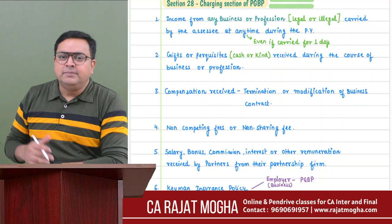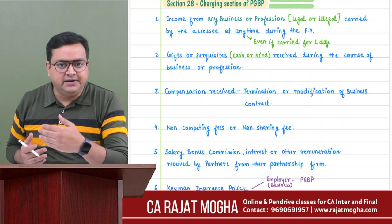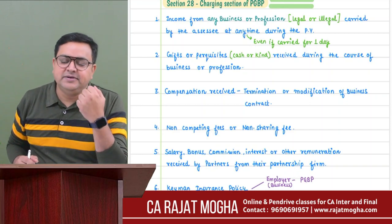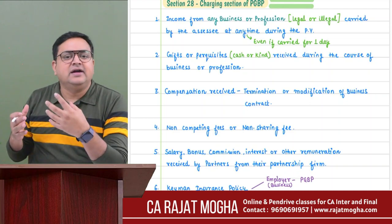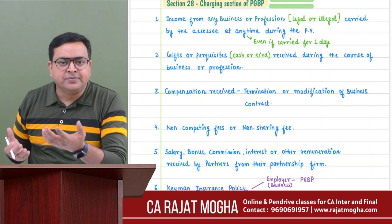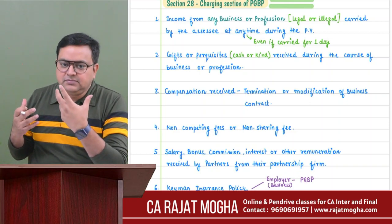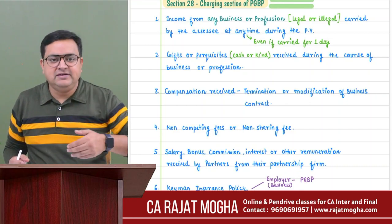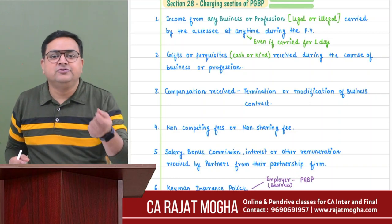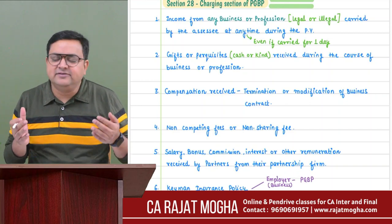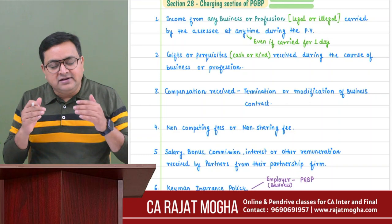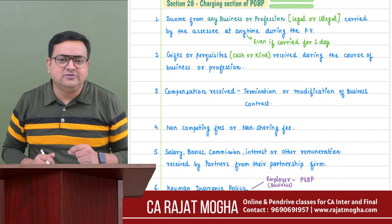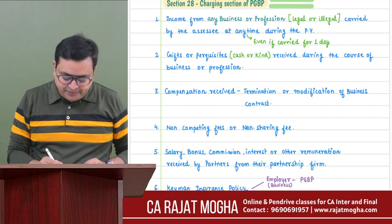Third point: if you receive any compensation because a business contract gets terminated or its terms are modified and you suffer damages, the compensation received is PGBP income. Although compensation may be of a capital nature, section 28 specifically states that any compensation received due to breach or modification of the terms of a business contract will be taxable as PGBP.